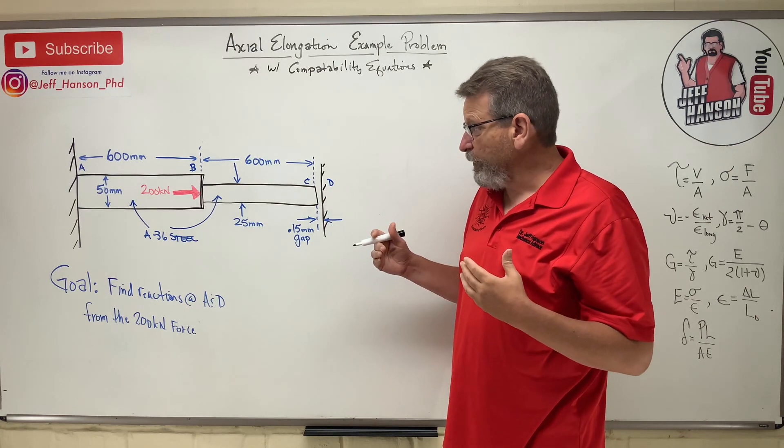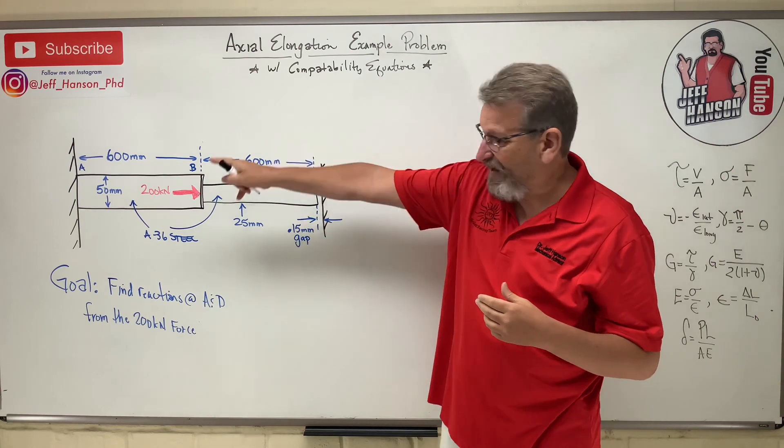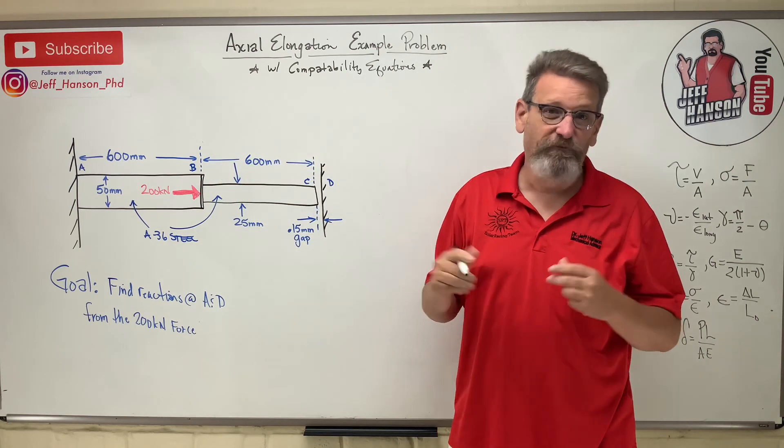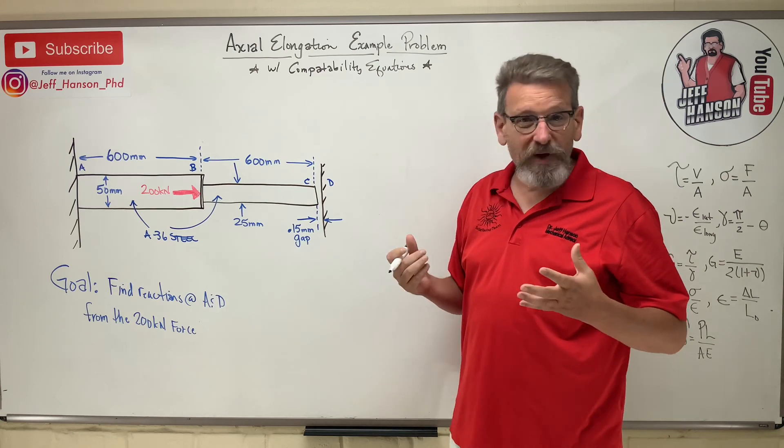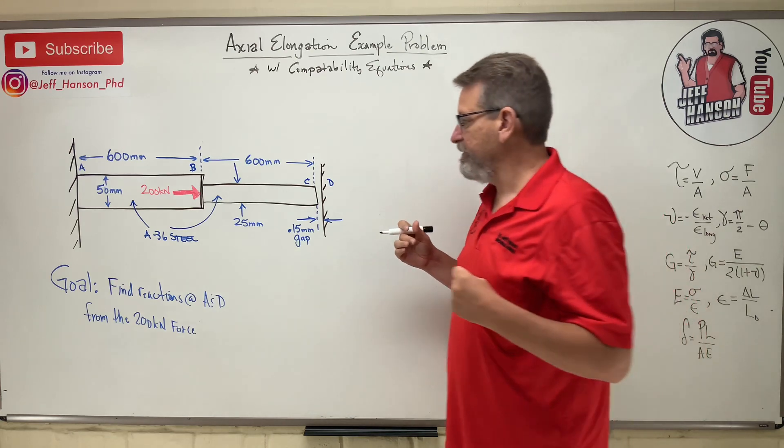So how do we find the reactions at A and D? Here's D, this wall. A is that wall over there. So reaction forces, we've got to find that. So how do you do that? What are these compatibility equations?